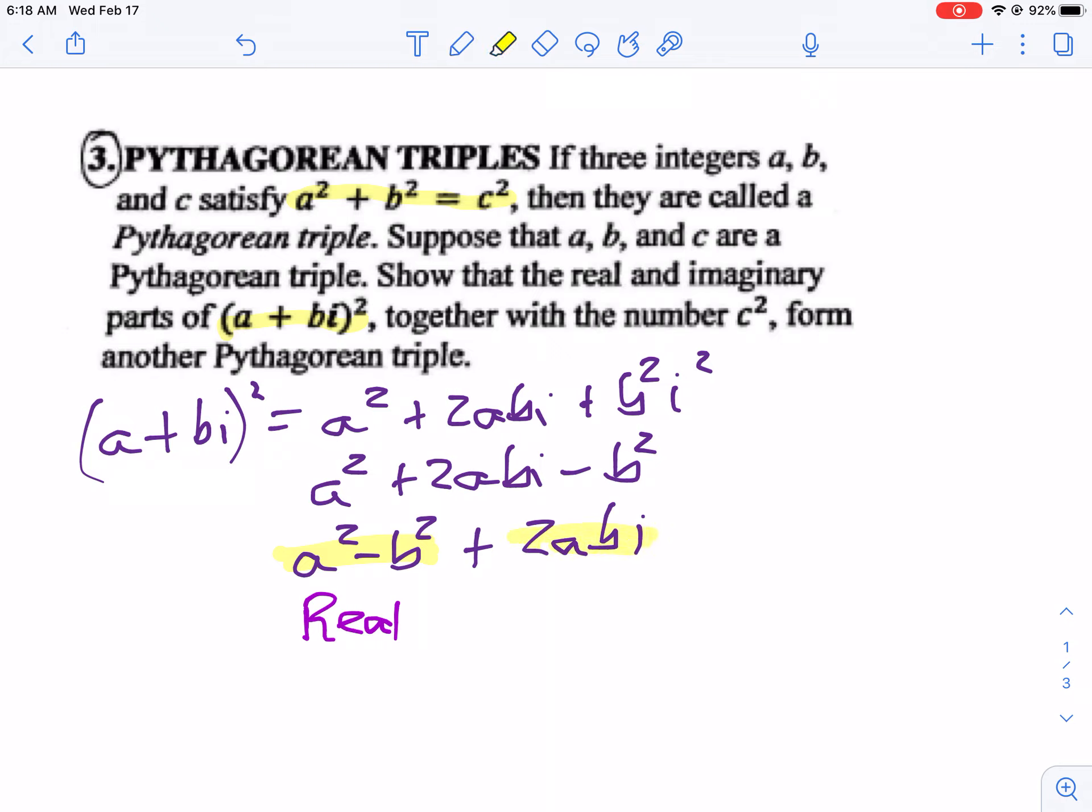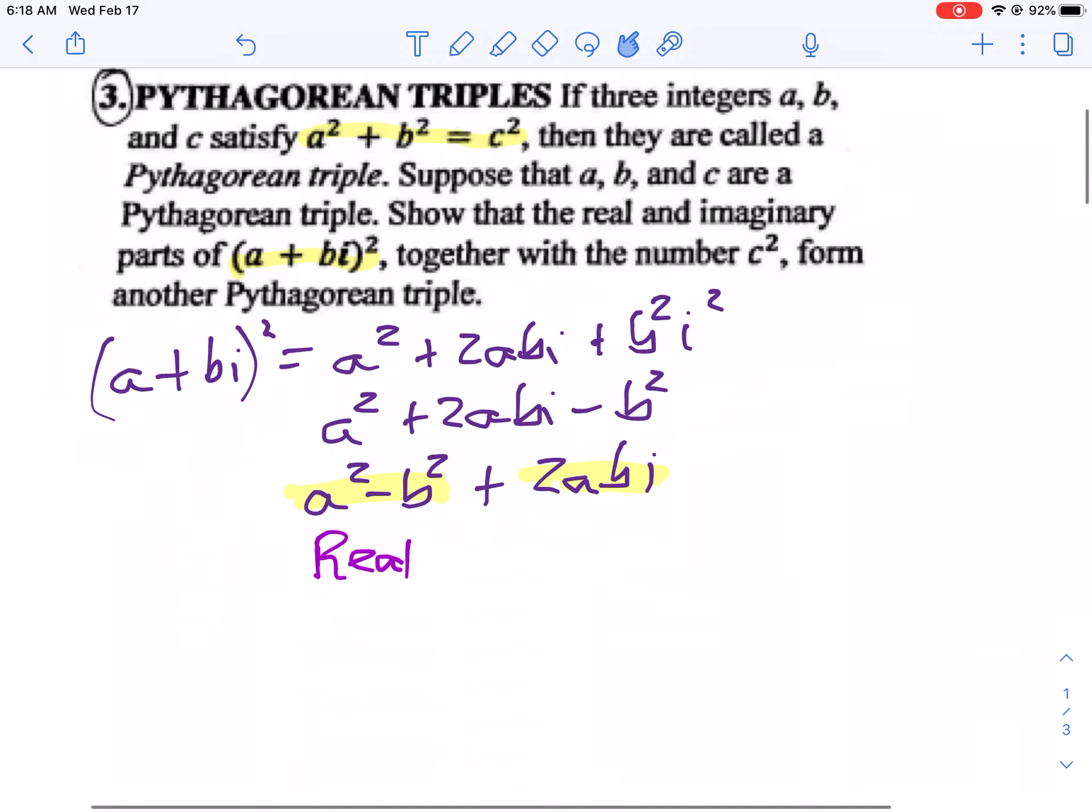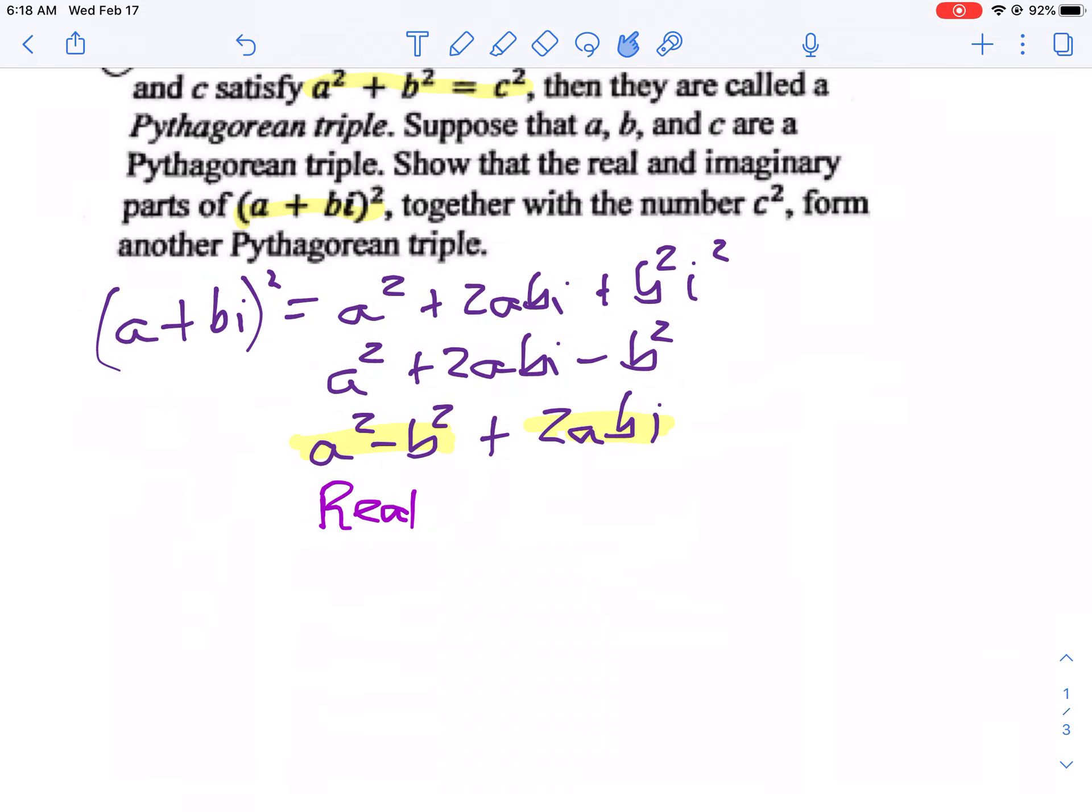Obviously with the I, that's the imaginary part. Now let's do A squared plus B squared.